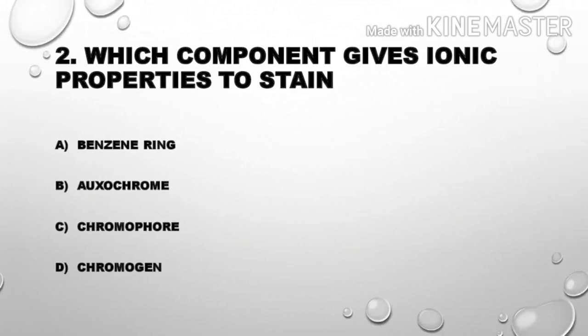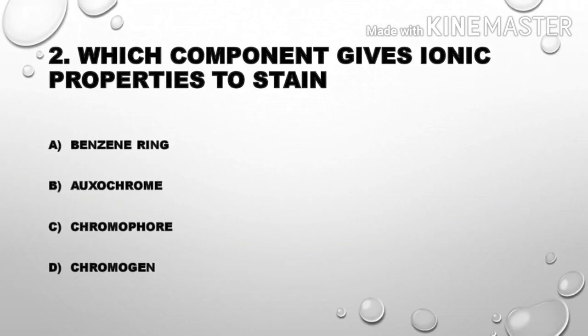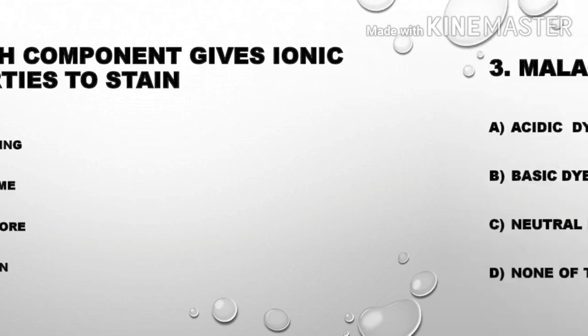Second question: Which component gives ionic properties to a stain? Option A: benzene ring; Option B: oxochrome; Option C: chromophore; Option D: chromogen. The correct answer is Option B, oxochrome, as it is the component responsible for ionic properties in a stain.